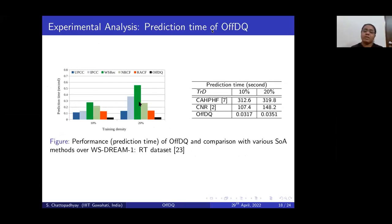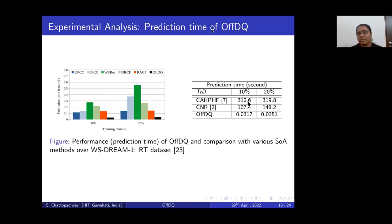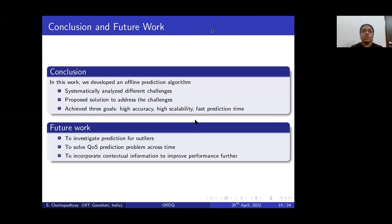In the prediction time performance study, since OBDQ can be trained offline and uses the pre-trained model for prediction, it has significantly less prediction time. We compared our method to methods with higher accuracy, and our method is significantly faster. Therefore, our method can be integrated into a real-time system.